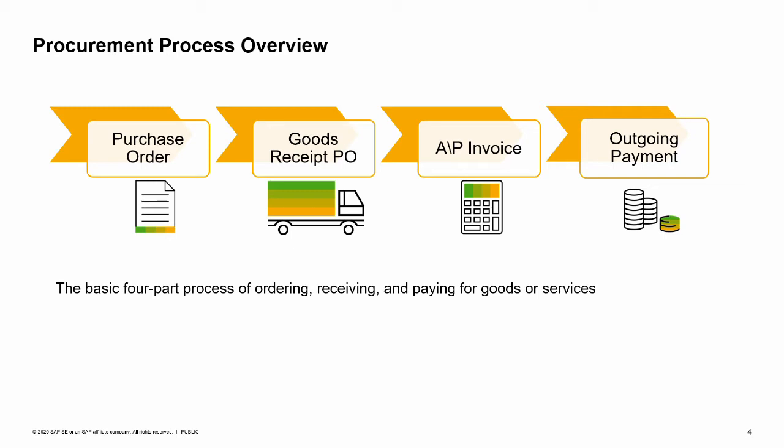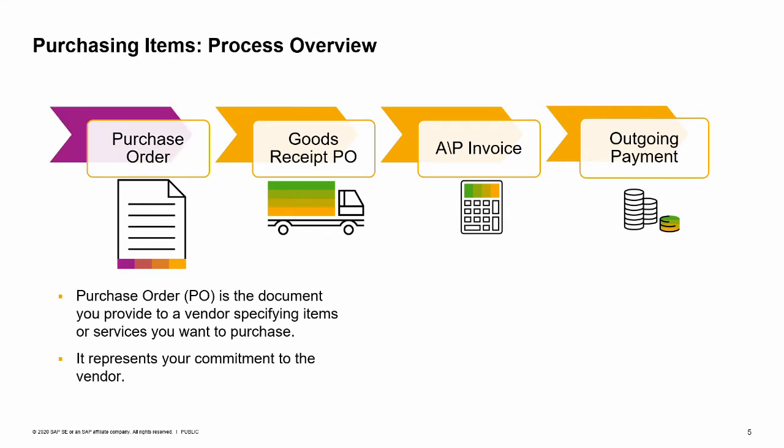The graphic shows the basic four-part process of ordering, receiving, and paying for goods or services. The Purchase Order (PO) is the document you provide to the vendor specifying the items or services you want to purchase, including agreed-to quantities and prices. It represents your commitment to the vendor to purchase the items.